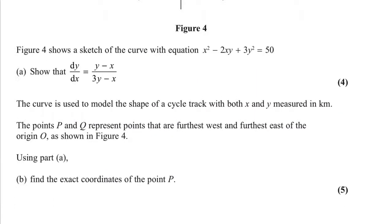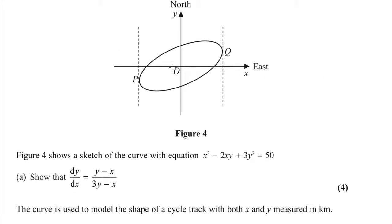Part 2 now tells us that this is a model of a cycle track. P and Q are the points furthest west and east, and if you look at the diagram, they've drawn little lines down through P and Q for us. Hopefully, you can see why they've done that. That shows that the gradient at that point isn't 0. A lot of you thought it was 0. It's infinity. It's a vertical line, not a horizontal line.